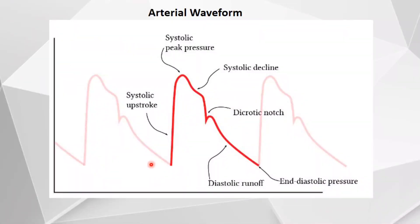In the arterial waveform, you can see the systolic upstroke, the systolic peak pressure, then a systolic decline followed by the dicrotic notch, and then the diastolic runoff and the end diastolic pressure.